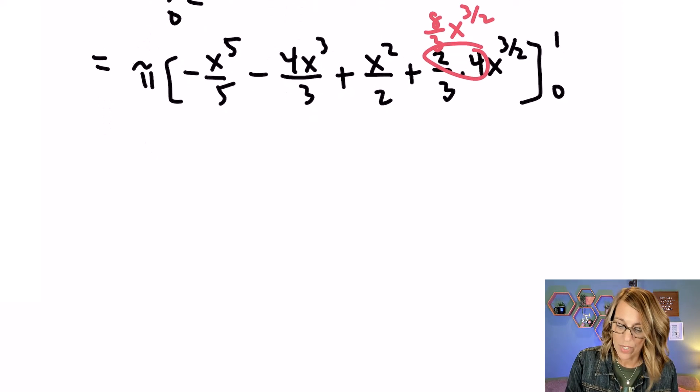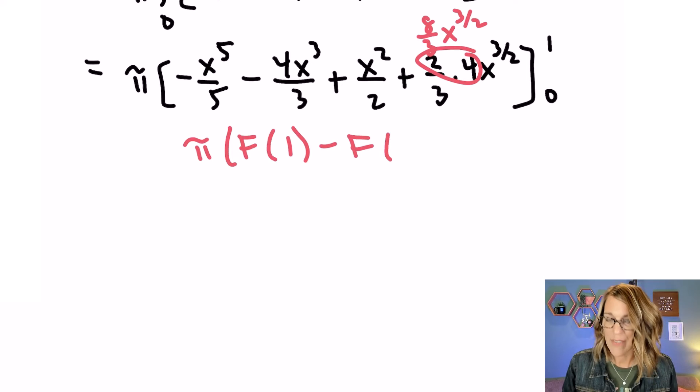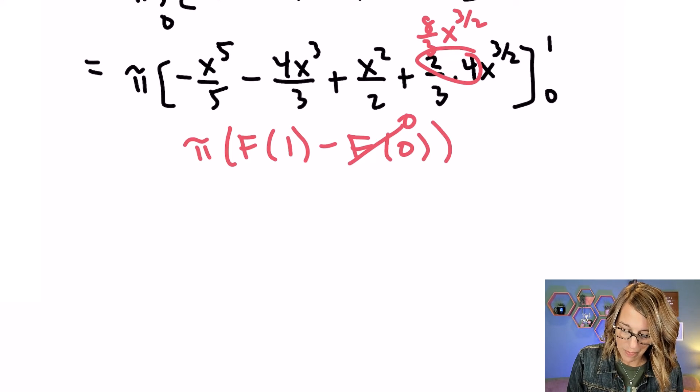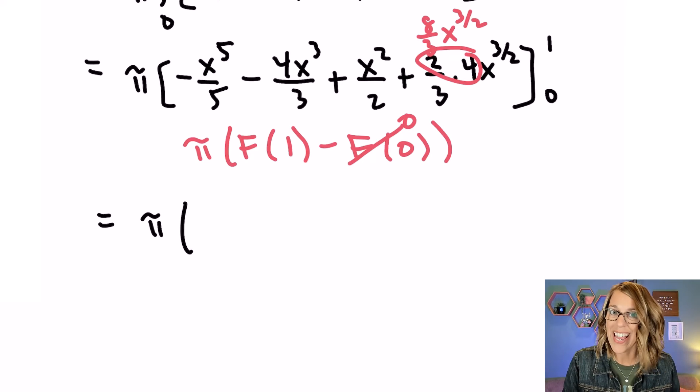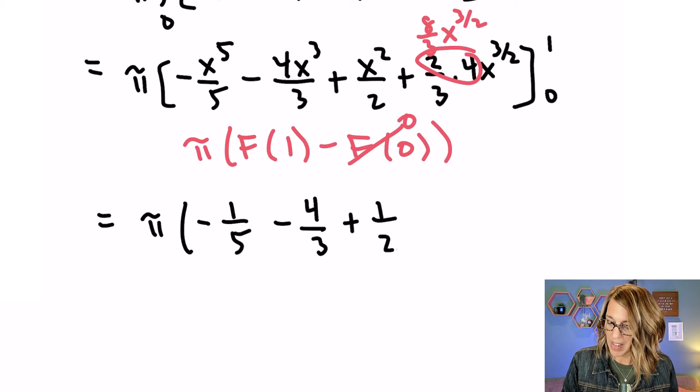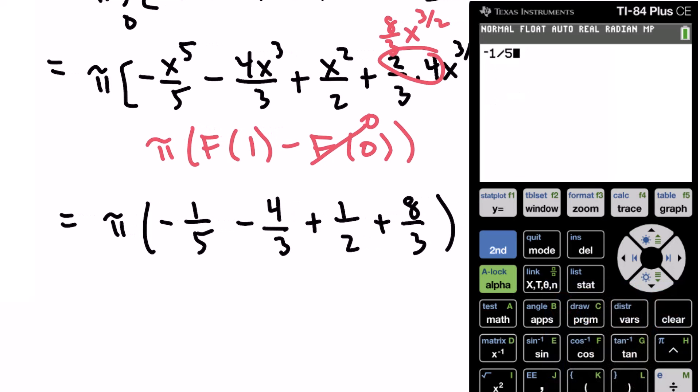Now this again works out really nice because as I use that fundamental theorem of calculus part 2, every single term has an x in it. So when I put a 0 in, the anti-derivative at 0 just goes to 0. So all I need to do is to replace all of those x's with a 1. So here we go. Pi is still on the outside. Replacing the x's with 1's, I get negative 1 to the fifth. Just negative 1 fifth. Minus 4x cubed. That'd be 4 times 1 cubed. 4 thirds. Plus 1 squared over 2. Plus that 2 times 4 becomes 8 thirds. And 1 to the 3 halves power is just 1.